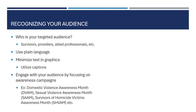Focusing on awareness campaigns is a great way to engage with your audience intentionally. For example, if you're a domestic violence agency that has data around safety planning or housing, that can be really helpful in using Domestic Violence Awareness Month to engage with both your data and the awareness campaign. Similarly, you can do this with Sexual Violence Awareness Month and Survivors of Homicide Victims awareness as well.